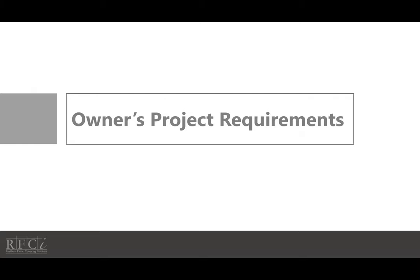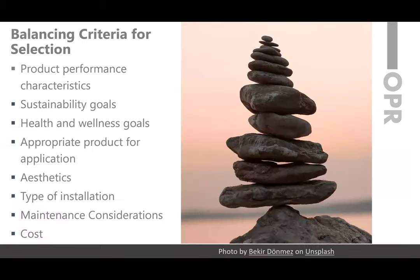The owner project requirements are the part of the design process known as the planning and programming section, which sets the stage for what happens during the rest of the design phases. This includes what's sometimes referred to as program requirements, and in healthcare, the functional programming process.